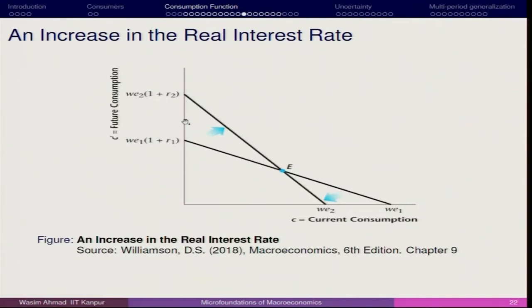If banks are offering you a higher rate of interest, it means that you should go for more saving, and then you can earn better interest in the future and have better consumption not in the current period but in the future period. As you extend this, here you are losing and here you are getting rewarded. The shift is smaller in current consumption and larger in future consumption. Moving up adds the 1+r dimension, so the slope of the budget line is different and steeper — reflecting the increase in the real rate of interest.